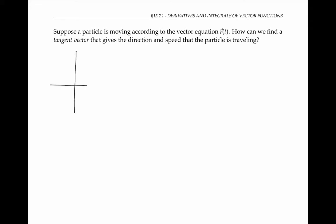More specifically, suppose a particle is moving according to the vector equation r of t — how can we find a tangent vector that gives the direction and speed that the particle is traveling? For simplicity, I'm going to draw a diagram in two dimensions, even though this process will work for three or even more dimensions. Let me fix a t value t equals a, which will correspond to maybe this point right here. So now if I draw a vector whose initial point is at the origin, the tip of this vector is the vector r of a.